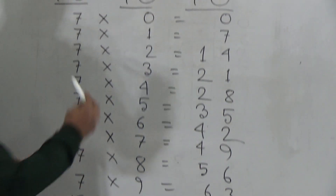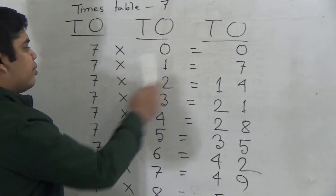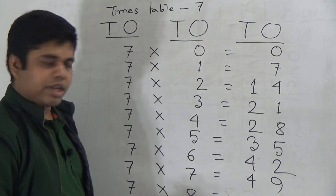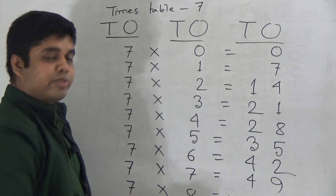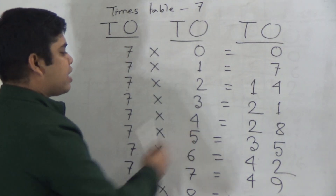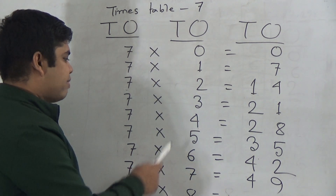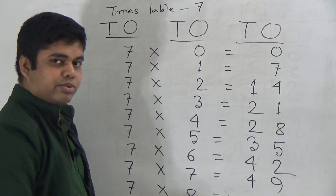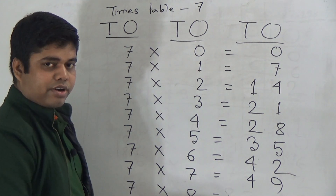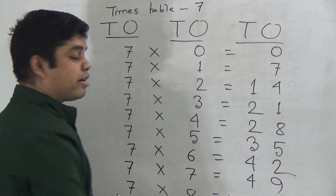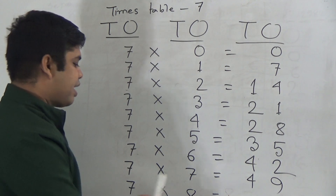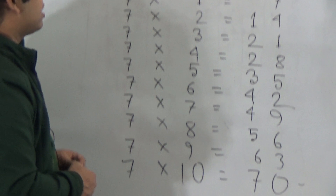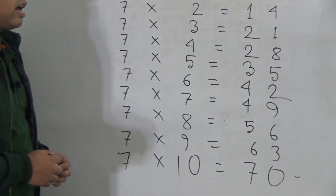My dear students, now please read with me: seven zeros is zero, seven ones is seven, seven twos are fourteen, seven threes are twenty-one, seven fours are twenty-eight, seven fives are thirty-five, seven sixes are forty-two, seven sevens are forty-nine, seven eights are fifty-six, seven nines are sixty-three, and seven tens are seventy.